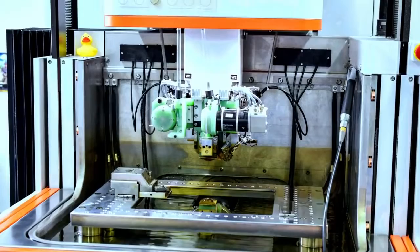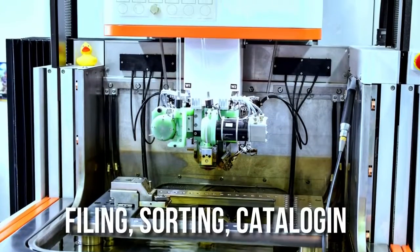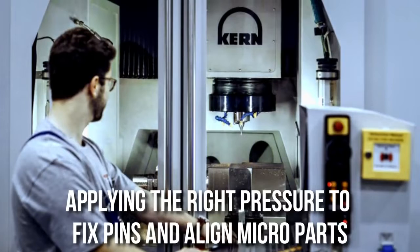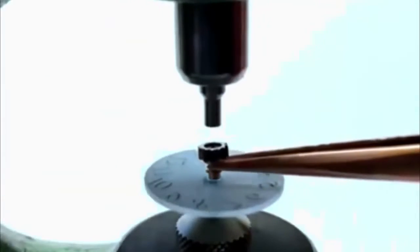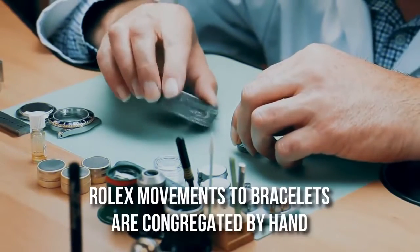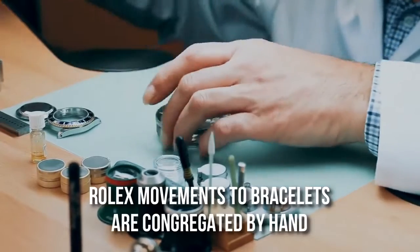Some of the key tasks accomplished by the semi-automated machinery include filing, sorting, cataloguing and applying the right pressure to fix pins and align microparts. In addition to this, they carry out ultra-delicate procedures such as the type of care you want a machine to execute, beginning from Rolex movements to bracelets are congregated by hand.